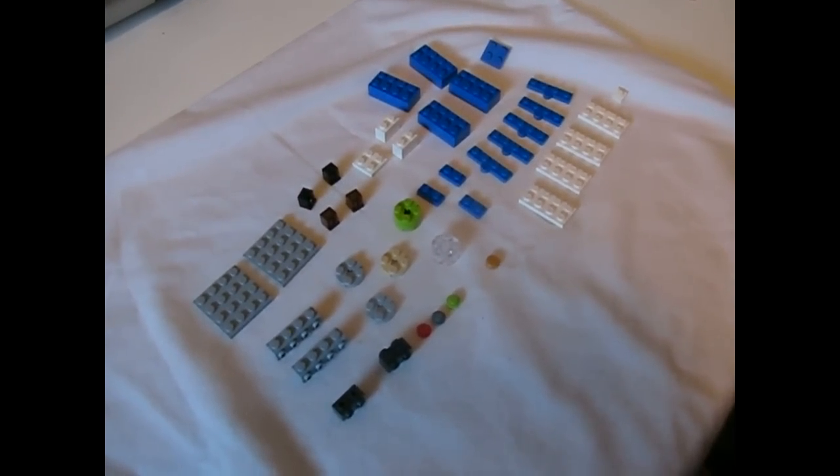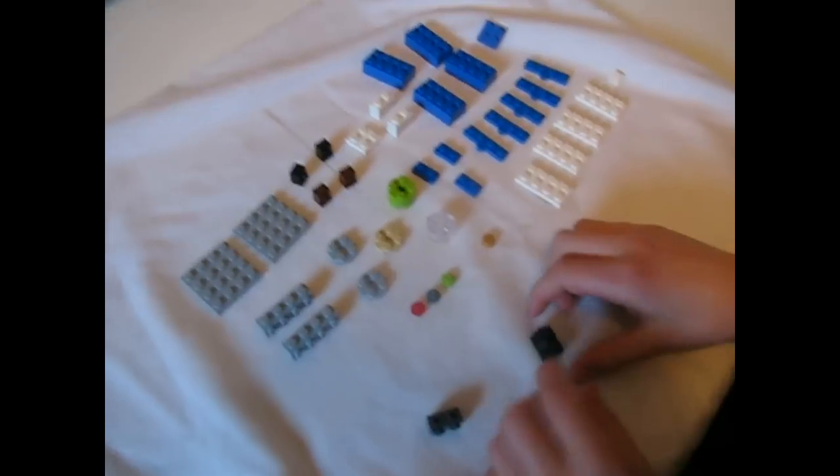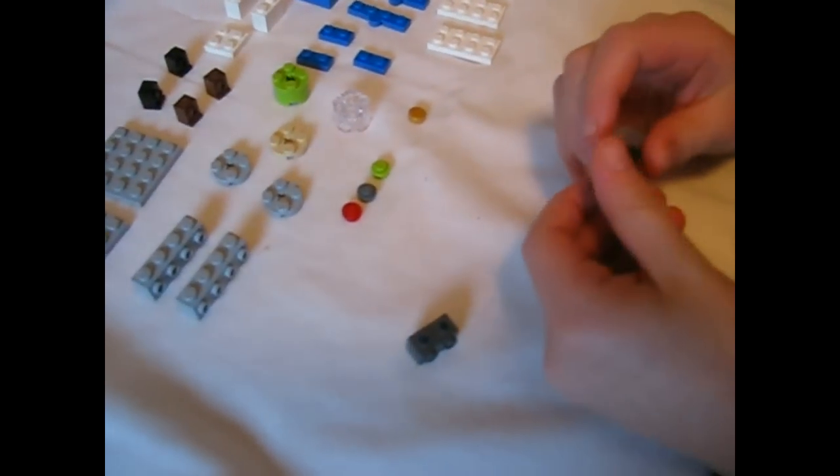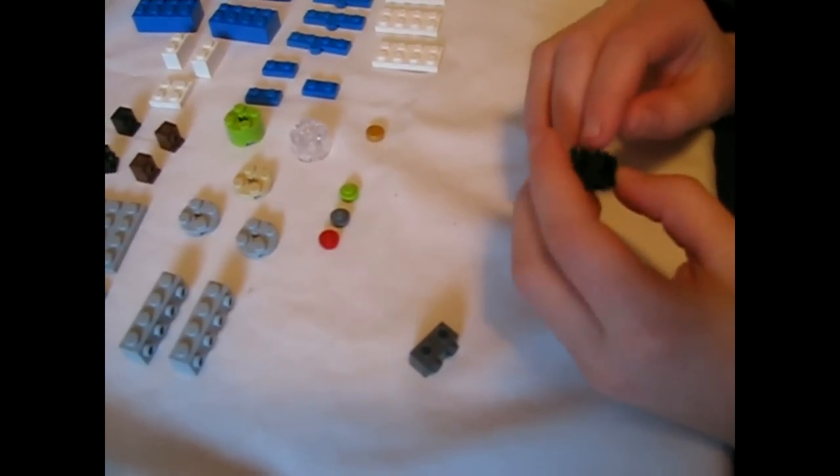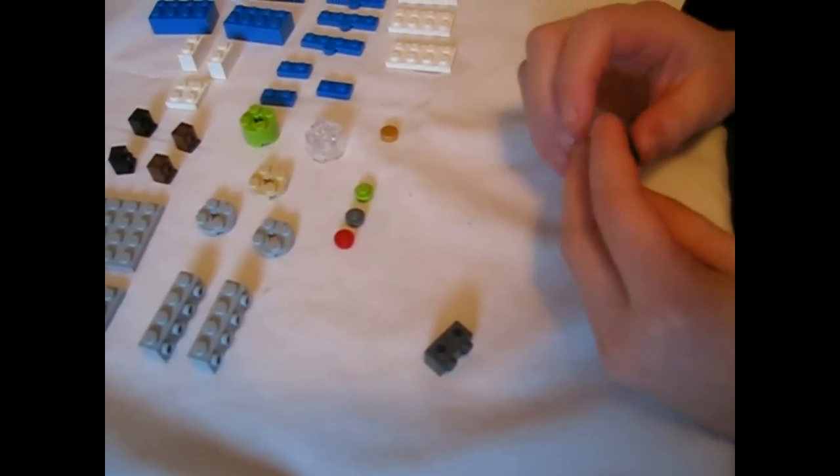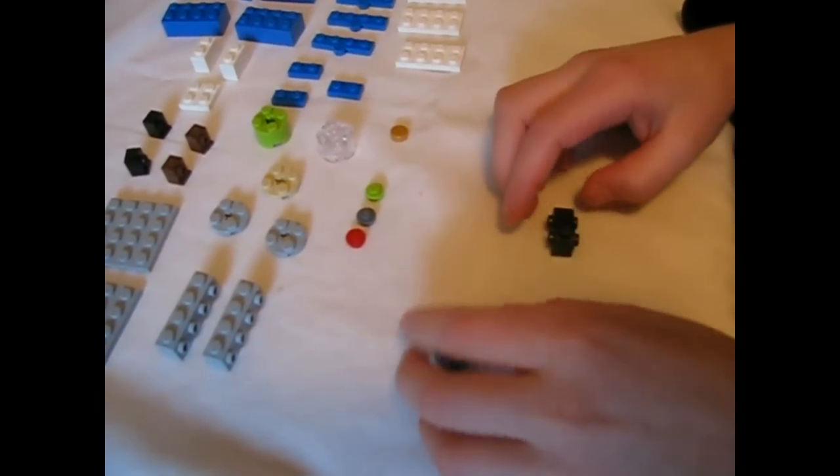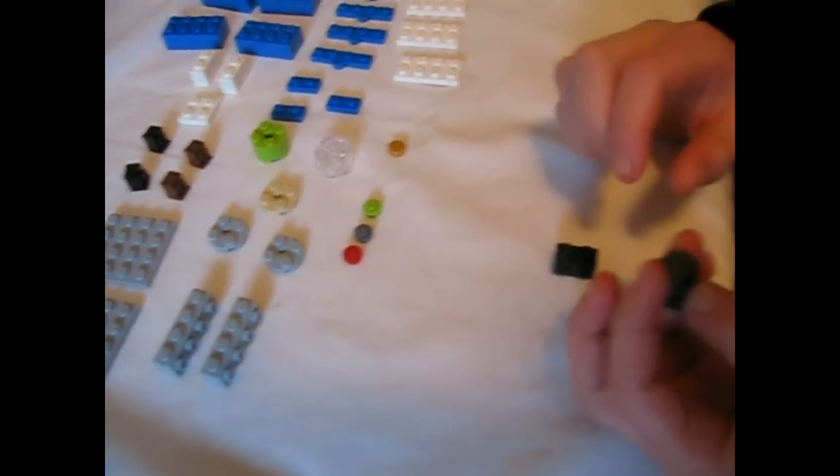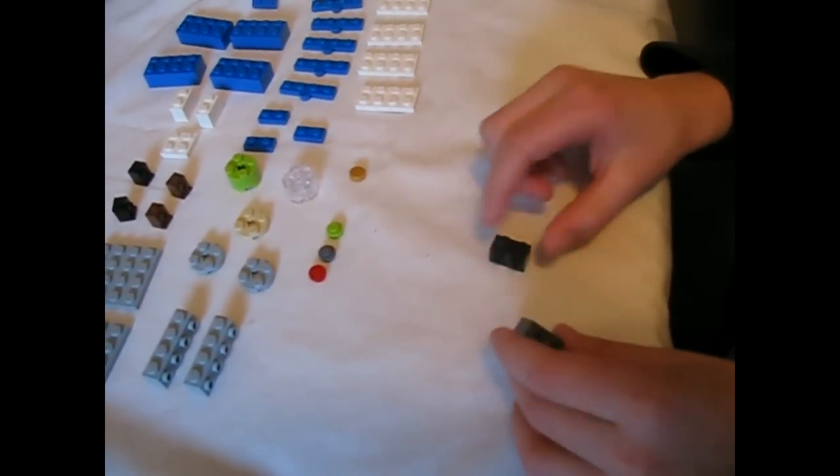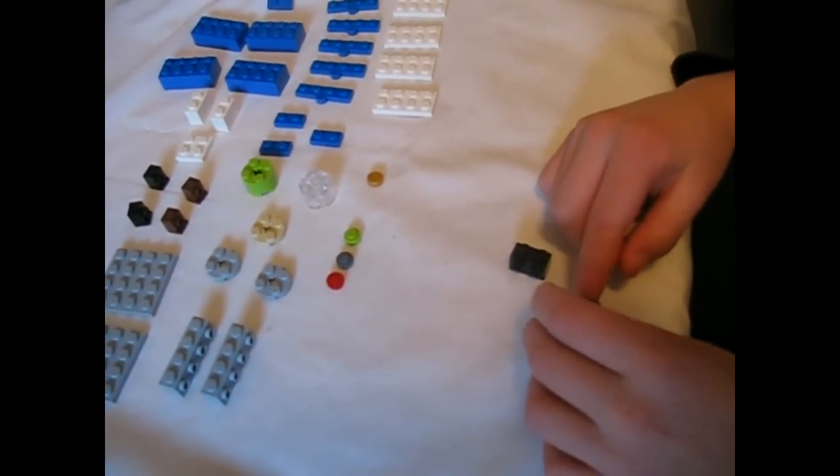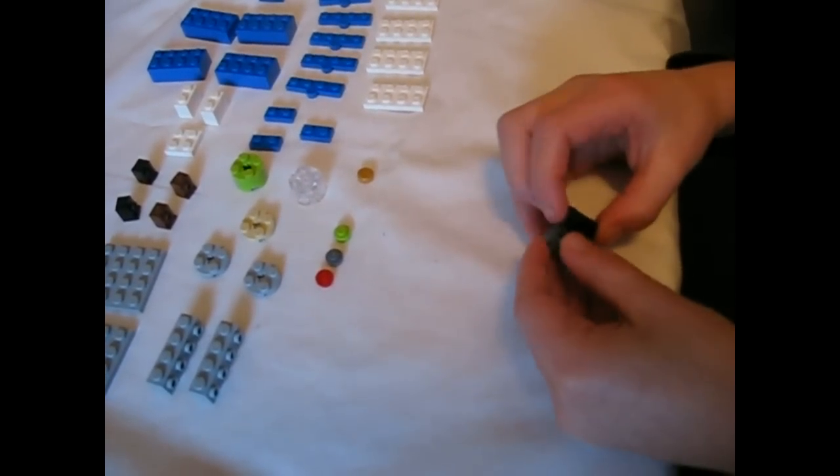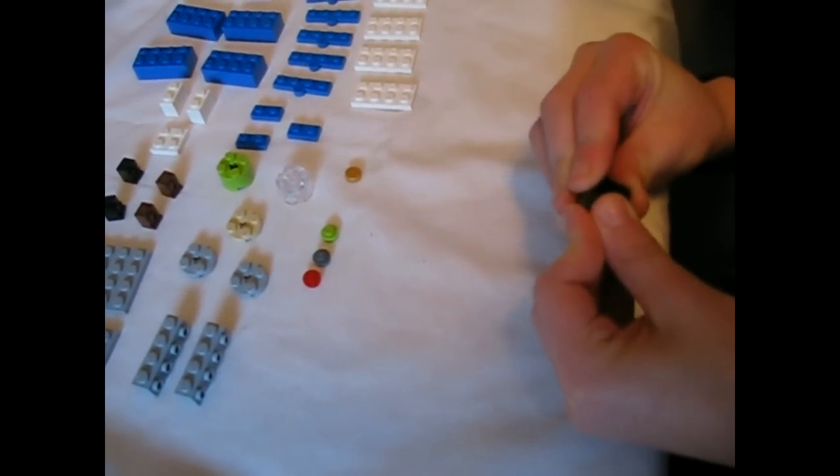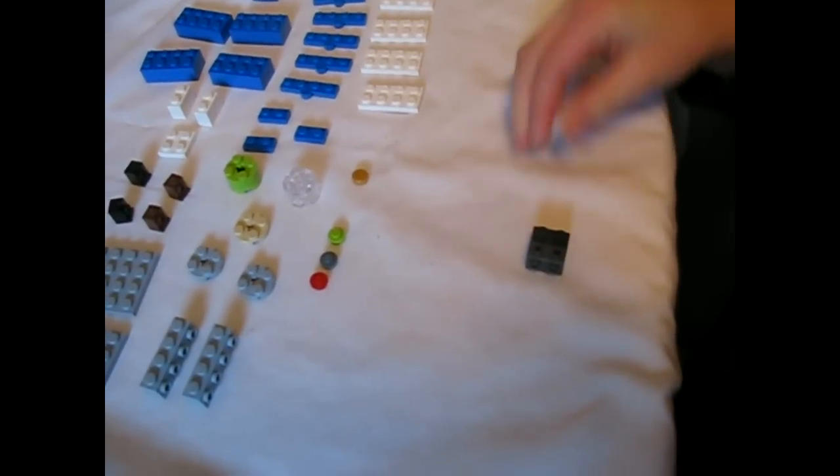First you start off with these two pieces, two by two. Two studs on each side except for the bottom. And you get one of these but with holes and stick two of these studs on these holes right there.